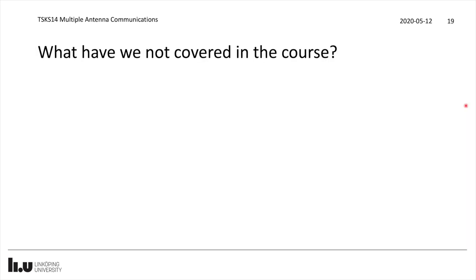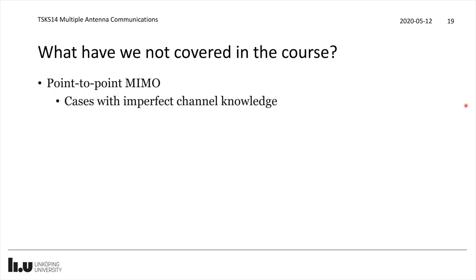What have we not covered in this course? There is a wide range of things — I have been selecting to cover the fundamentals, both in the point-to-point MIMO cases, the fading channels, and the multi-user or massive MIMO cases. When it comes to point-to-point MIMO, cases with imperfect channel knowledge at the receiver or at the transmitter haven't been covered. We covered the case when the transmitter doesn't know the channel at all, but what if it knows it partially? And for the receiver, we always assumed perfect channel knowledge, but what if it only has estimates similar to the massive MIMO cases?